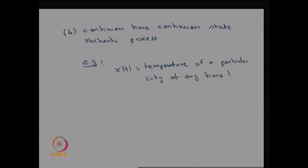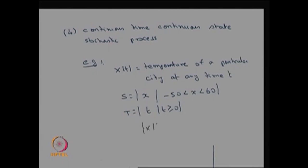Since it is observed at any time t, t can take any value, so the parameter space T is greater than or equal to 0 and is continuous. The state space S is the temperature — suppose a particular city's temperature lies between minus 50 to 60 degrees Celsius. Therefore, both the parameter space and the state space are continuous, and this collection of random variables forms a continuous time, continuous state stochastic process.